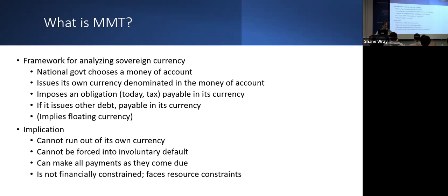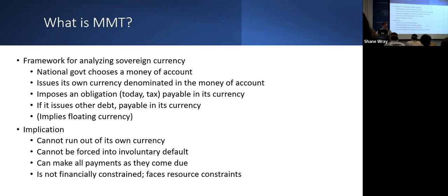A country with sovereign currency is one in which the national government chooses the money of account, issues its own currency denominated in that money of account, and imposes obligations — today mostly taxes, but in the distant past mostly fines and fees — payable in its own currency. If it issues other debt, those are also payable in its own currency, which implies you're floating your currency. The implications are that you cannot run out of your own currency, cannot be forced into involuntary default, and can make all payments as they come due.